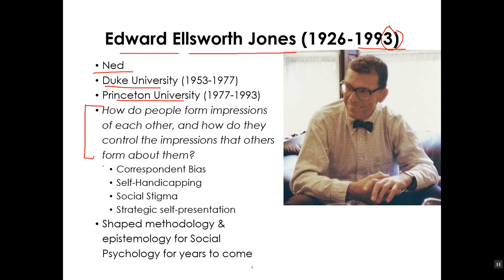When asked how he would sum up his career, Jones said he was interested in how people form impressions of each other and how they control others' impressions of them. The areas he did research in to become a famous social psychologist included the Correspondent Bias — which by itself would have placed him in the top five social psychologists of all time — research on self-handicapping, social stigma, and strategic self-presentation, that is, the strategies people use to present themselves in the best possible light. He shaped the methodology and epistemology for social psychology for years to come.